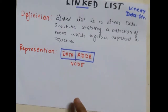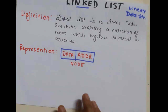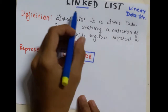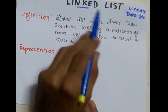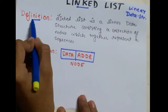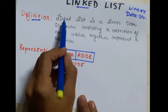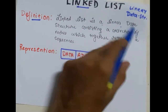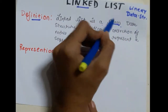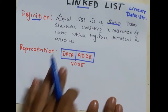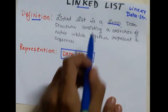In my previous lectures we have seen two linear data structures, that is Stack and Queue, and today we will see the next linear data structure, that is linked list. Starting with the definition — linked list is a linear data structure, just like Stack and Queue.